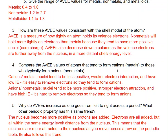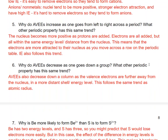Why do AVEEs increase as we go from left to right across a period? The nucleus becomes more positive as we go across the row because more protons are added. Electrons are also added, but they're all in the same energy level, so they're the same distance from the nucleus. This means electrons are more attracted to the nucleus as you move across a row. Ionization energy follows this same trend.